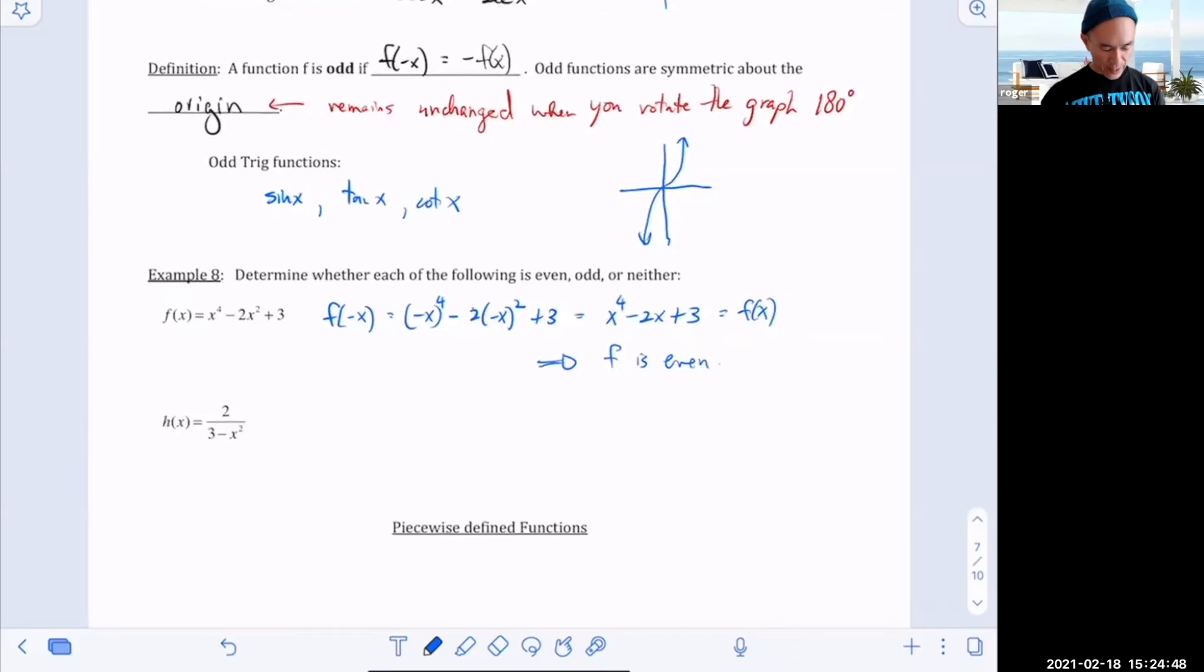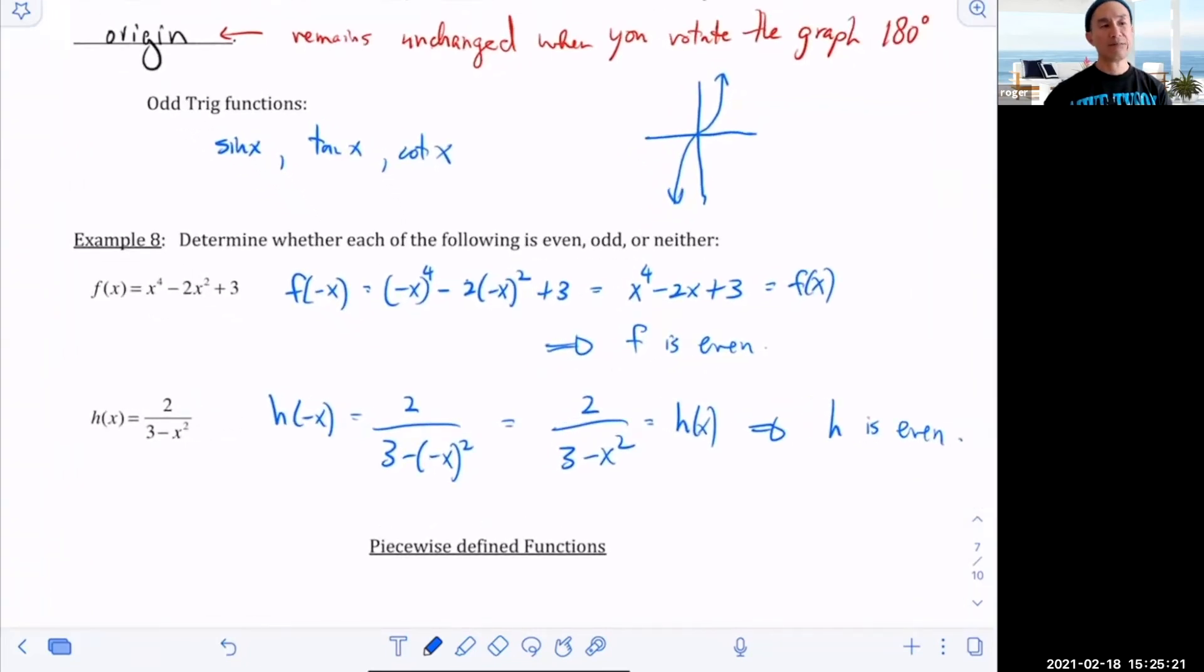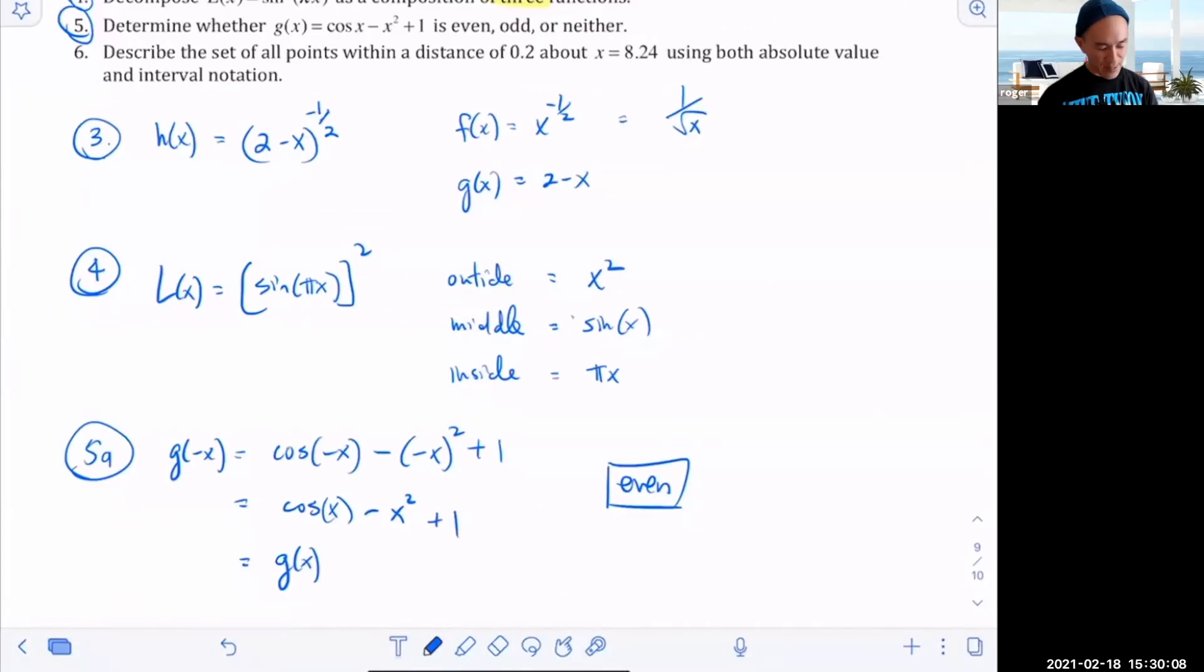Let's look at this other example over here. So if we have h of negative x, that's going to be two over three minus negative x squared. That's equal to two over three minus x squared. This is the same as my original function h of x, this means h is even. Seems lame I would give you two even examples, but that's what happened.